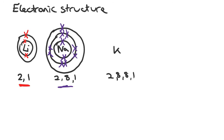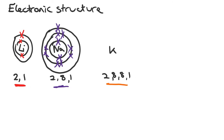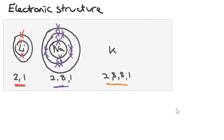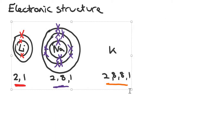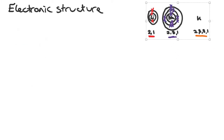For potassium I know the electron configuration is 2, 8, 8, 1 as there is a total of 19 electrons and the outer shell has 1 electron as it is in group 1. So that is all theory we know and we are fairly used to.